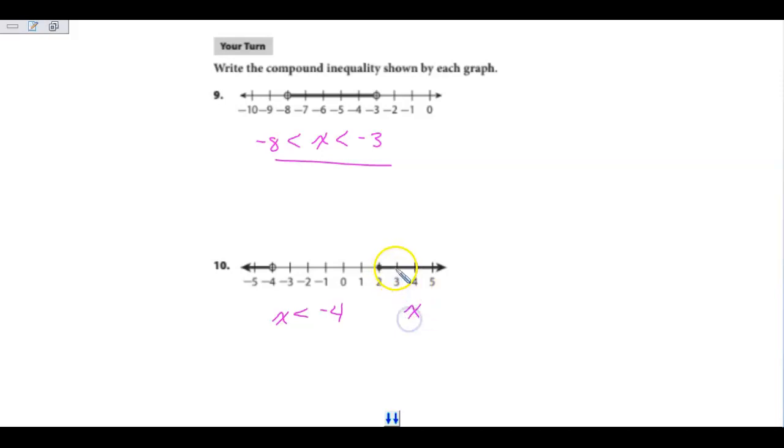So X is greater than OR, so OR equal to, and this is 2. And then we're going to put the word OR in the middle. So this is how you would write this one.